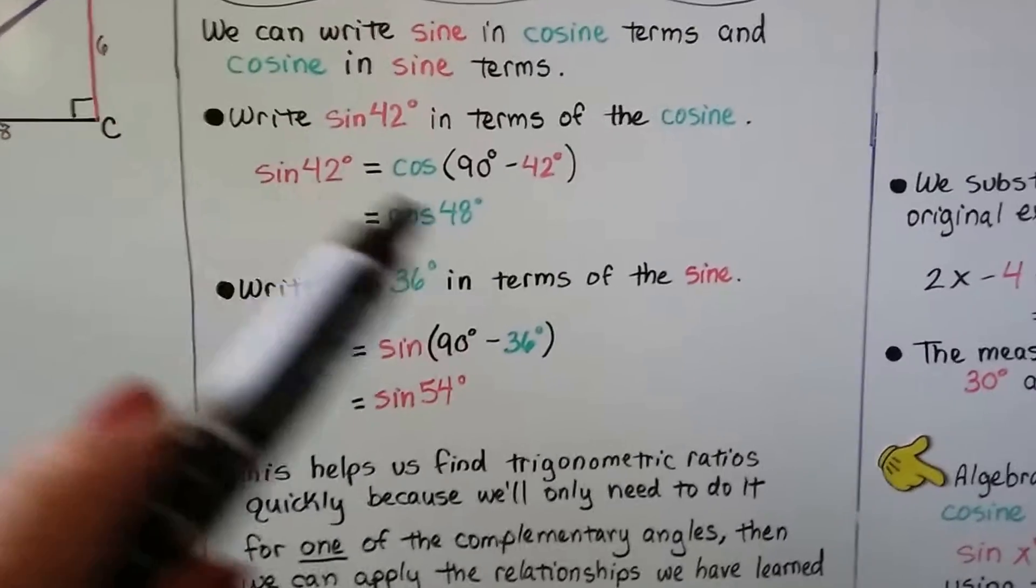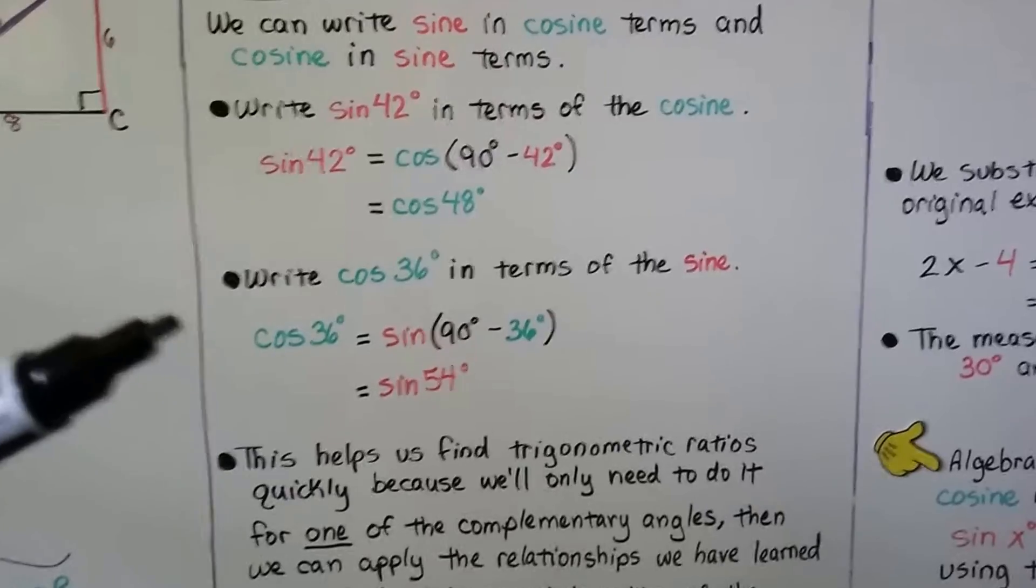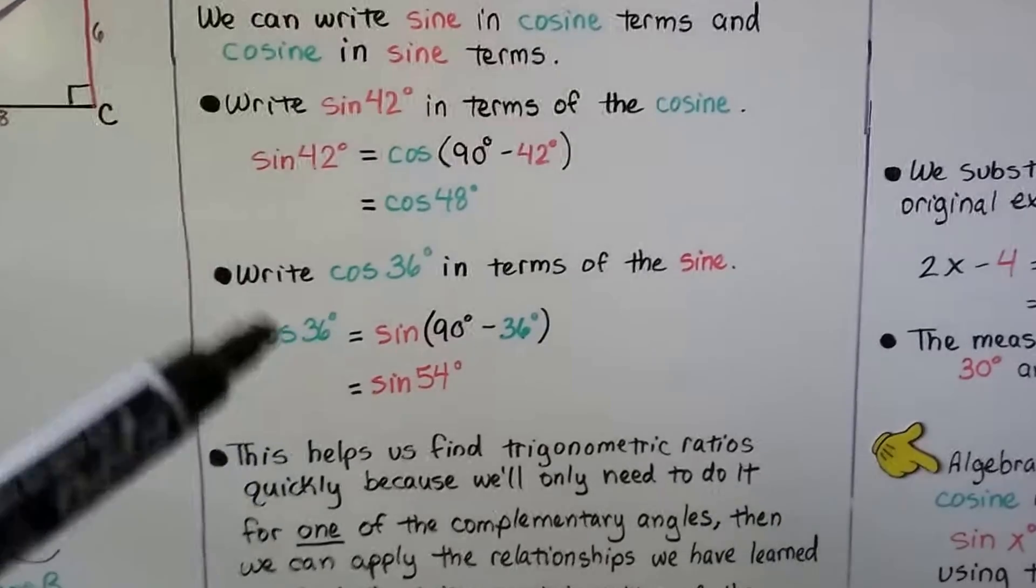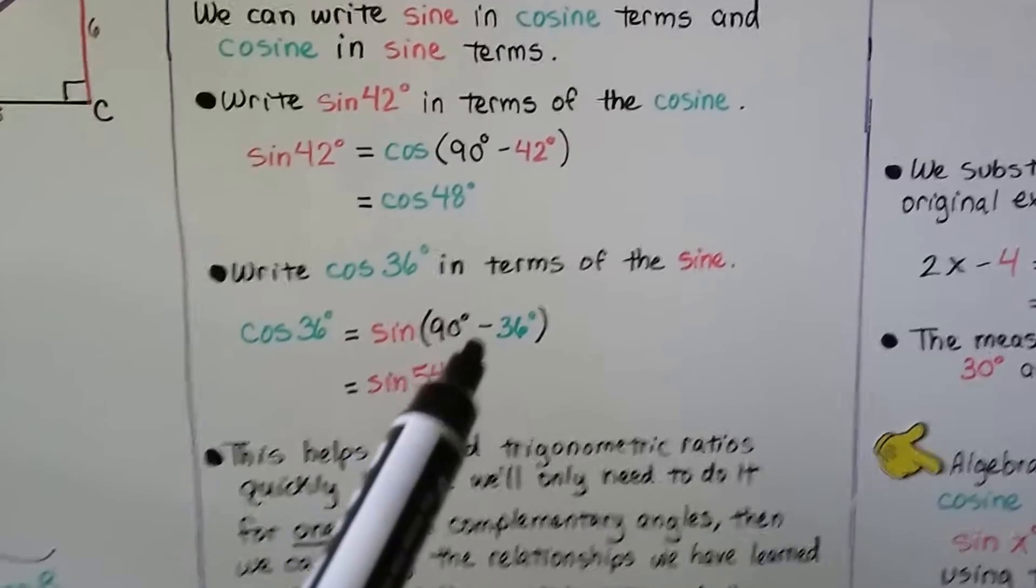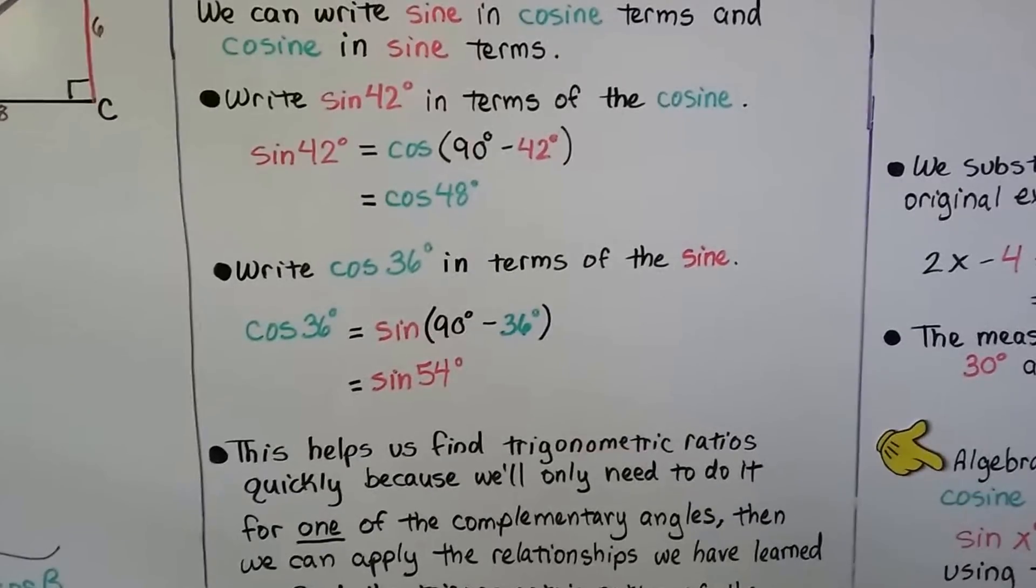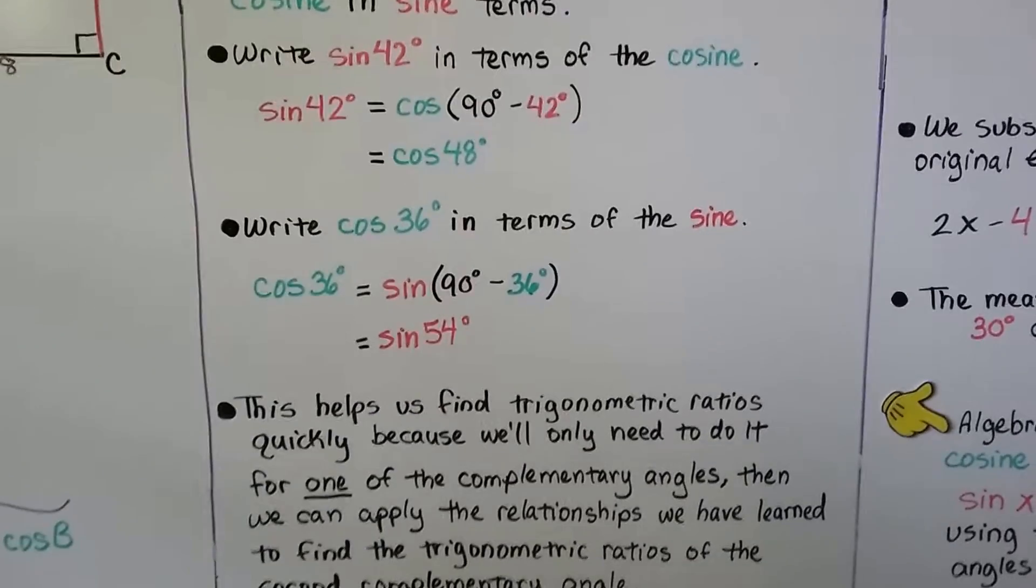Together, they equal 90. We can write the cosine of 36 degrees in terms of the sine. The cosine of 36 degrees equals the sine times 90 degrees minus 36 degrees. Well, that's 54 degrees. And these two together total 90 degrees.